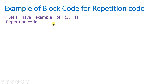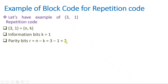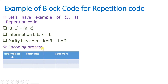Consider the example of a 3-comma-1 repetition code. Comparing with block code notation n-comma-k, here n equals 3 and k equals 1, meaning 1 information bit, and redundant bits r equals n minus k equals 2. So there are 2 parity bits and 1 information bit. During the encoding process for repetition code, the parity bits simply repeat the information bit.